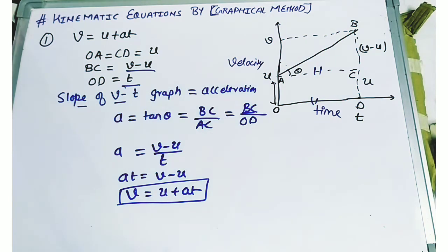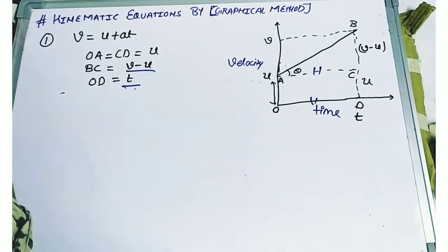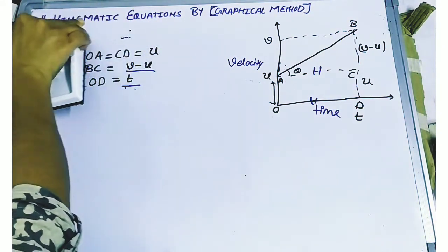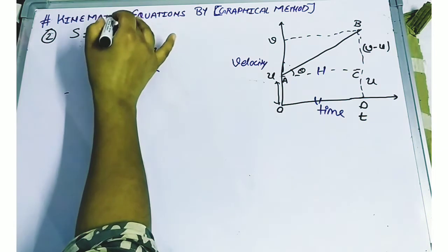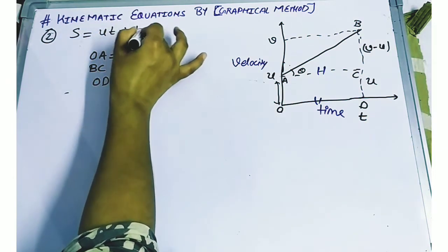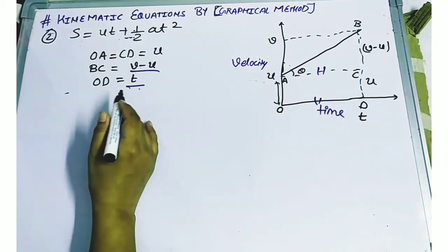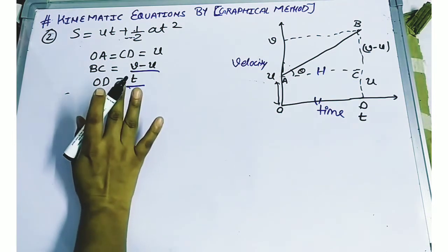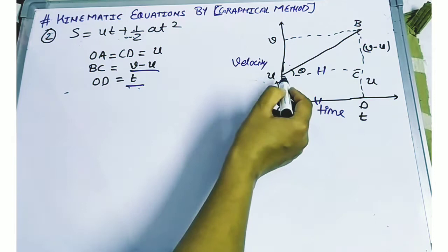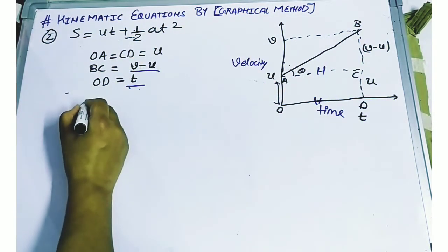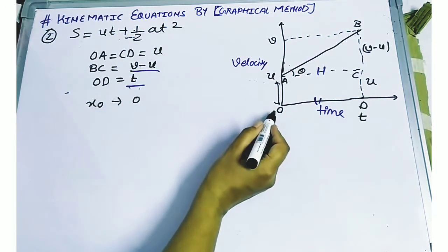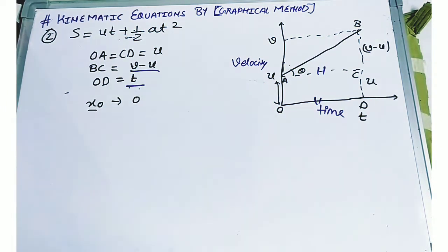I hope the first equation is clear. Now we are going to discuss the second equation of motion. The second equation of motion is: S equals ut plus half of at squared. If you will see here, we are going to discuss the distance travelled by the velocity-time graph in time interval t. The displacement or distance travelled — the object will be at the origin and its displacement will be x naught.